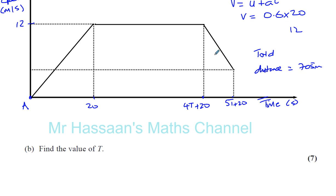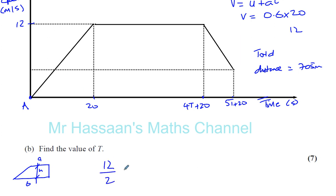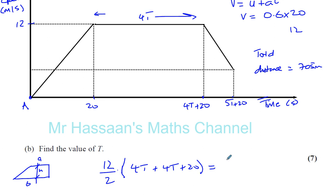For the big trapezium, the formula is the distance between the parallel sides divided by 2, times the sum of the parallel sides. The height (distance between parallel sides) is 12. The parallel sides are the time lengths: 4T and 4T plus 20. So the area is 12 divided by 2, times (4T plus 4T plus 20), which gives 6 times (8T plus 20), giving 48T plus 120.